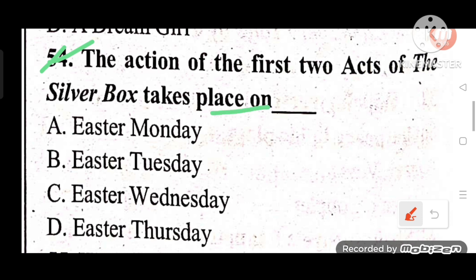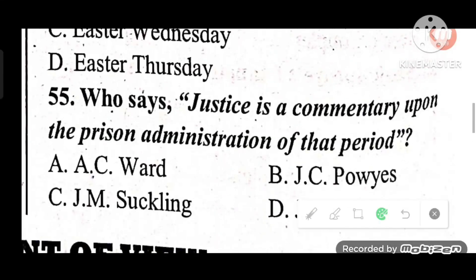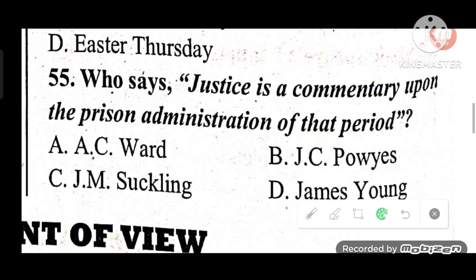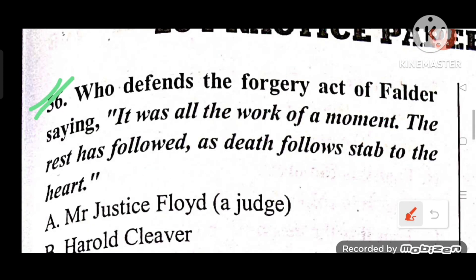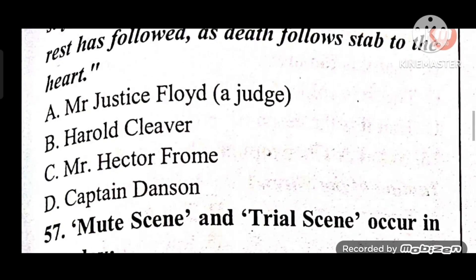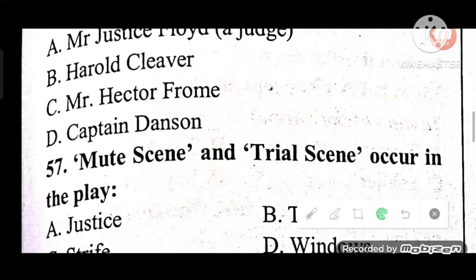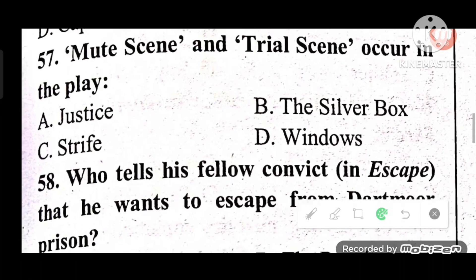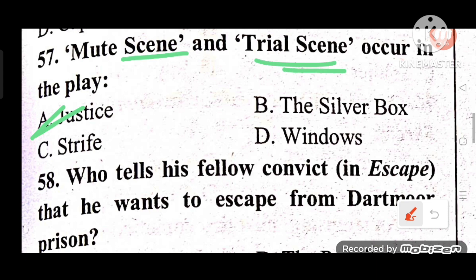Question 54: The action of the first two acts of The Silver Box takes place on which day? The answer is Easter Tuesday. Question 55: Who says 'Justice is a commentary upon the prison administration of that period'? The answer is C — Mr. Hector Fromm. Question 57: The mute scene and trial scene occur in which play? Options: Justice, Silver Box, Strife, Windows. The answer is A — Justice.